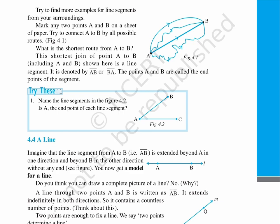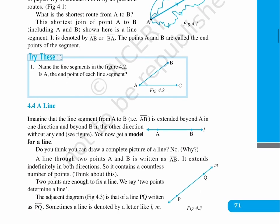Try these. 1. Name the line segments in the figure 4.2. Is A the endpoint of each line segment? In figure 4.2 we see two line segments starting from A. They are AB and AC.